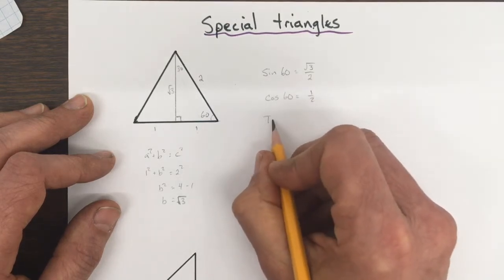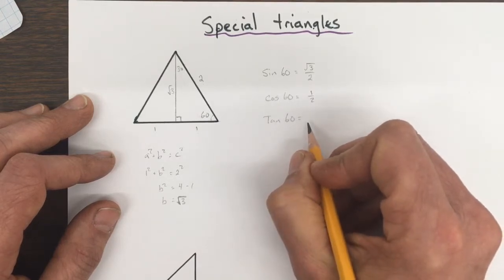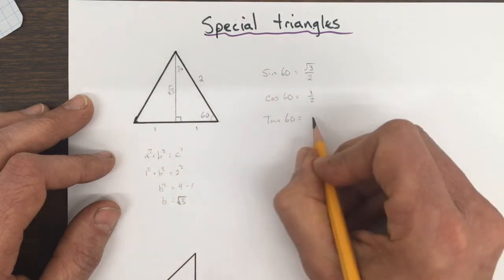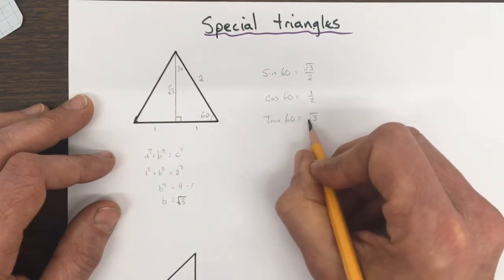And the tan of 60 is equal to opposite over adjacent, or root 3 over 1, which is just root 3.